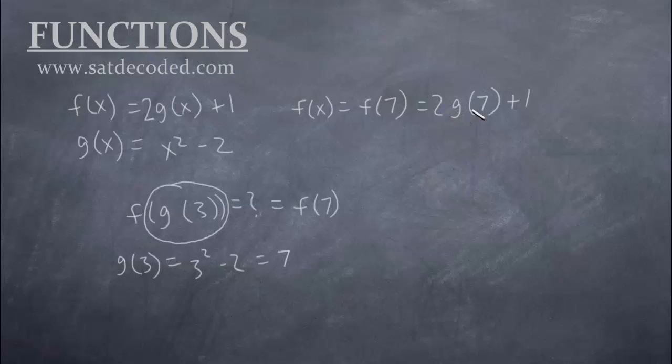This 2 in front of the g(7) just means 2 times whatever g(7) comes out to be. So let's find out what g(7) is first. So g(7) is, according to our formula down here, going to be 7 squared minus 2, because 7 is our input so that goes where the x is. So that is 49 minus 2. So 49 minus 2 is 47.